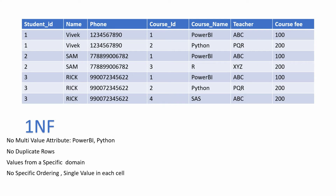The main objective of this video is to identify if this dataset is in second normal form, and if not, how do we make it second normal form compliant. As the definition states, no non-prime attribute should be partially dependent on a portion of the composite primary key. So first we need to identify the primary key. Student ID alone is not the primary key because it repeats. Student ID and course ID together form the composite primary key for this dataset.